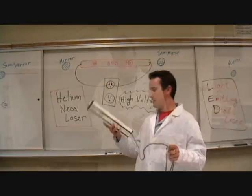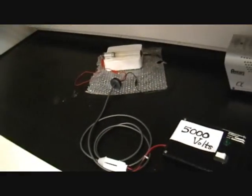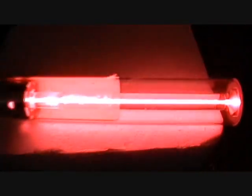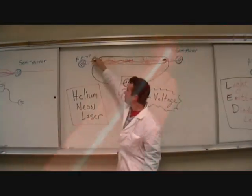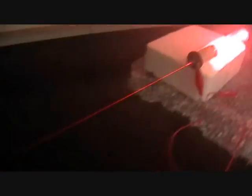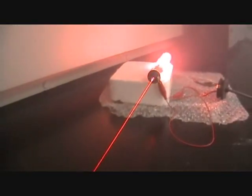The second common type of laser is the helium-neon laser, like this one right here. You take a tube of helium and neon gas and plug it into a high voltage source, and you zap the gas. Zapping the gas causes it to emit red light, which bounces back and forth between these two mirrors, eventually emerging in a straight line at the semi-mirror.